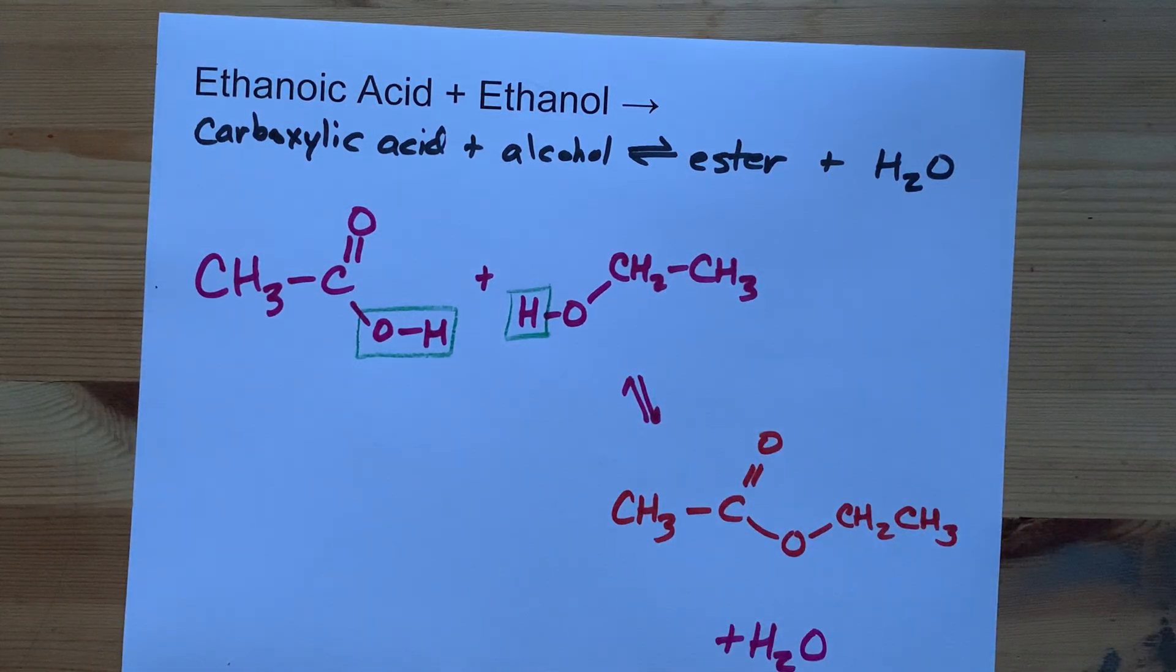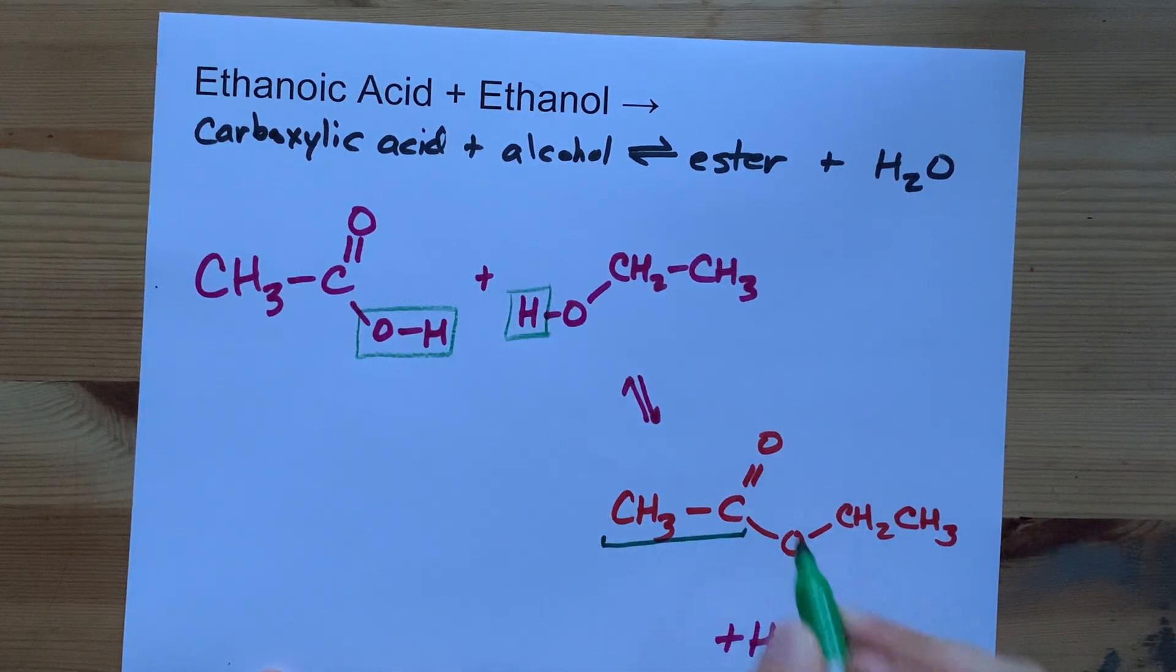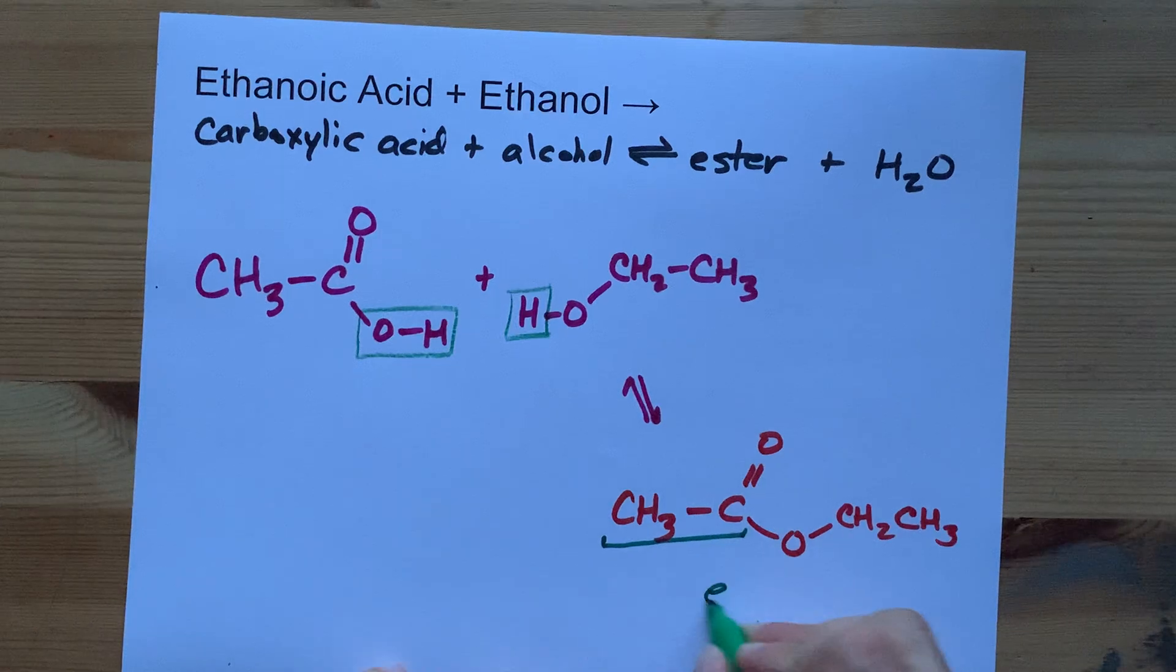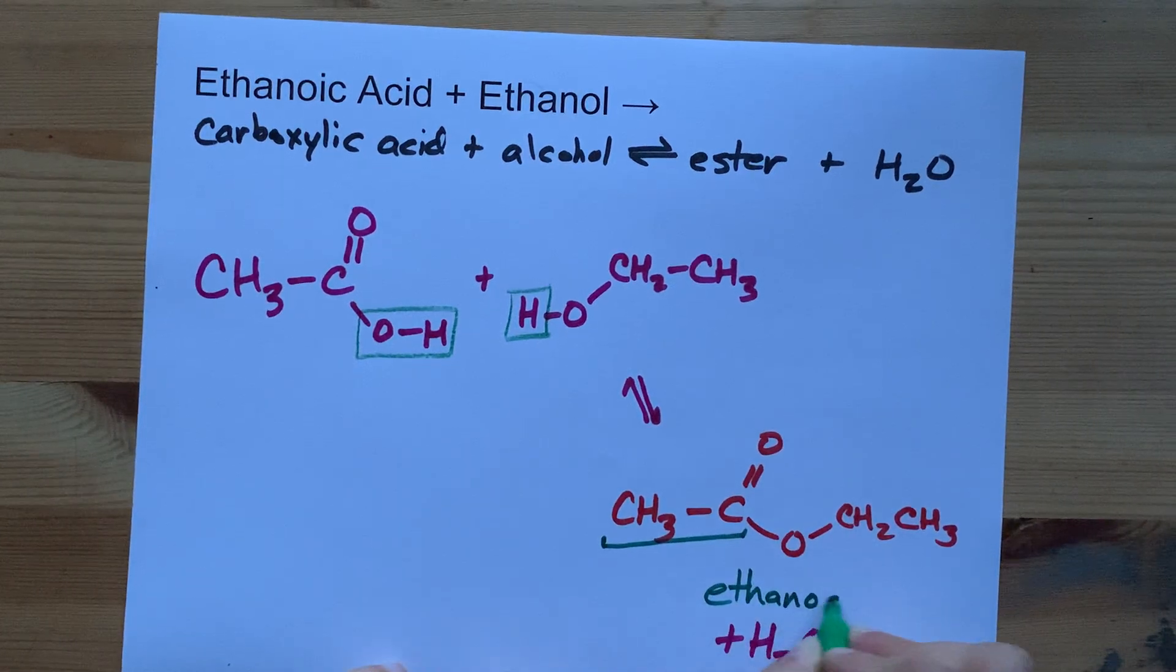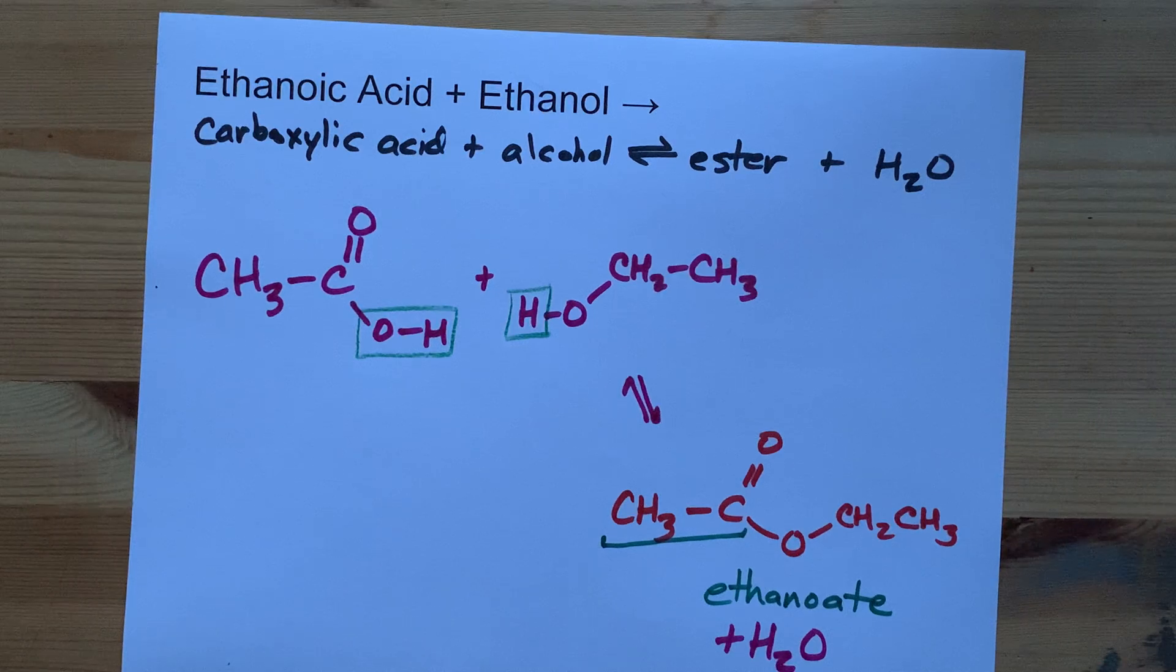Shall we name this? Well sure. The main chain is the one that has the double bonded O attached to it. It's two long, so you're going to call this ethanoate. O-ate being the ending that you give to an ester.